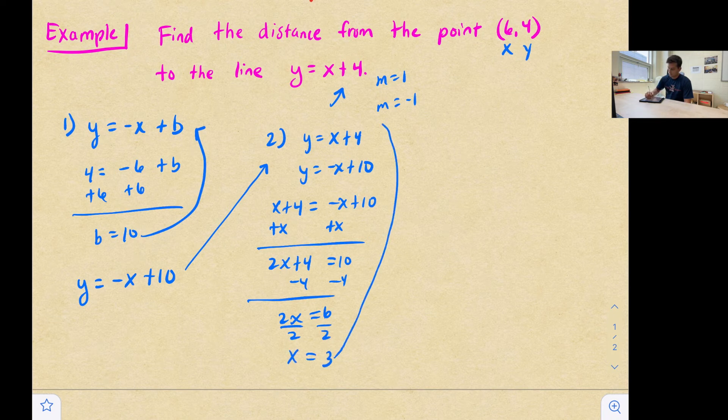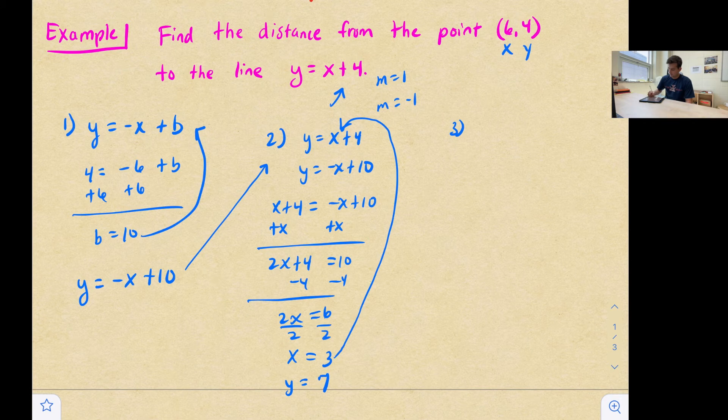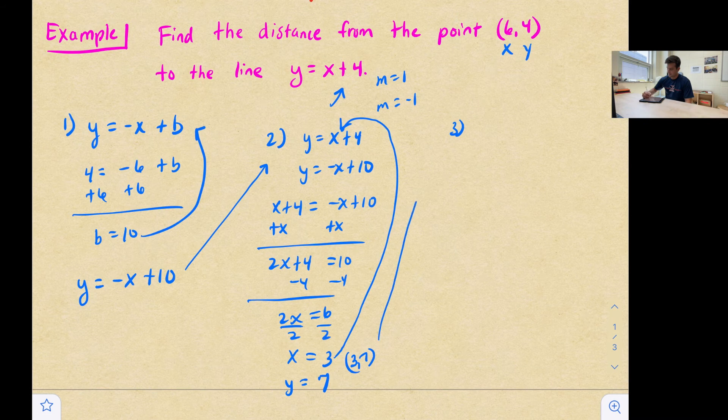So now to find y, we can just plug it right there for x. So y is equal to three plus four. So y is equal to seven. Okay, so now this would be the point three comma seven, which now is going to take us to step three.